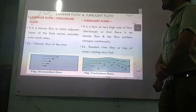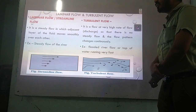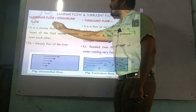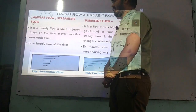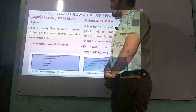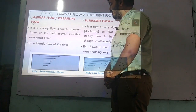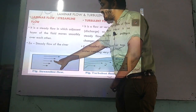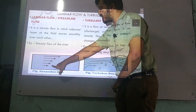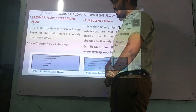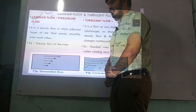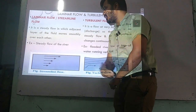Next is laminar flow and turbulent flow. Laminar flow is also called streamline flow, in which layers of the liquid flow very smoothly — each and every layer is parallel with each other. For example, the stream flow of a river or a slowly flowing liquid.